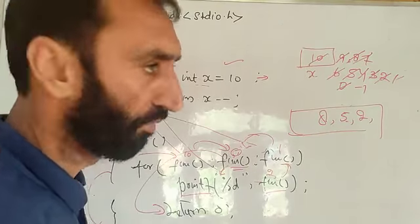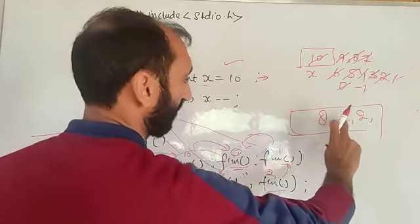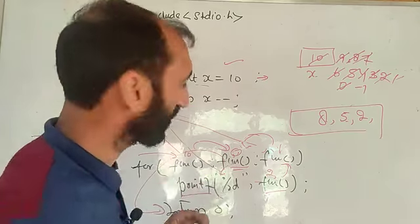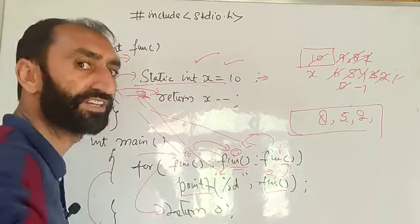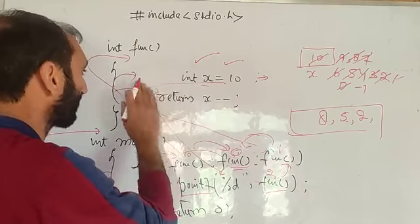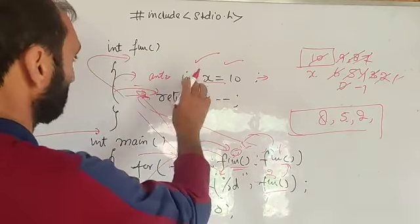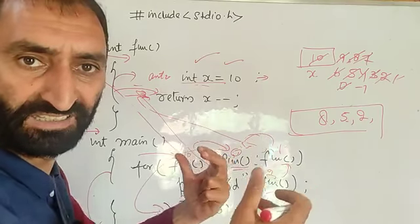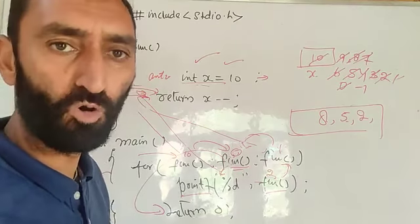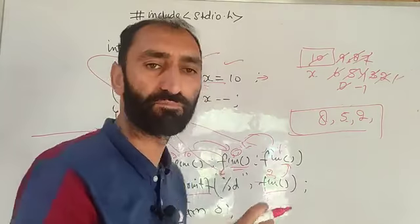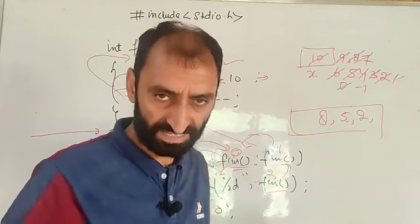I hope you have understood the working of the static keyword in this program and why the output is 8, 5, and 2. Notice that `x` gets initialized only once — after that, the initialization line is skipped because of static, as static variables retain their previous value. If instead we used `auto int x`, `x` would be re-initialized to 10 on every function call. In the next video, we will discuss two more questions on storage classes. Take care and bye.